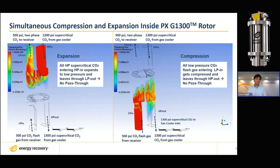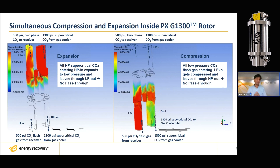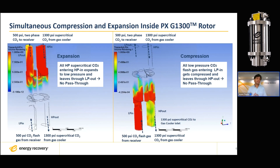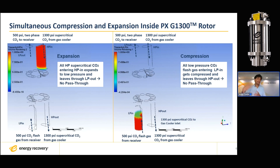In fact, the pressure exchanger is achieving this feat of free compression by using the expansion work recovery in the other half of the rotor, as seen on the left side of this animation. What you are seeing there is high-pressure supercritical CO2, maybe at around 1500 psi coming from the gas cooler exit, enters the rotating duct of the pressure exchanger. It eventually gets sealed up, and as that duct gets exposed to the low-pressure pole, there is an expansion wave that sets in and sort of isentropically expands that high-pressure supercritical CO2 into a low-pressure two-phase liquid gas mixture.